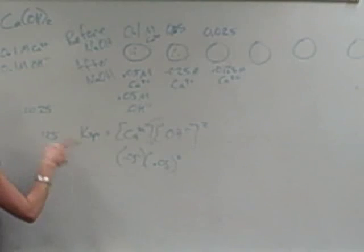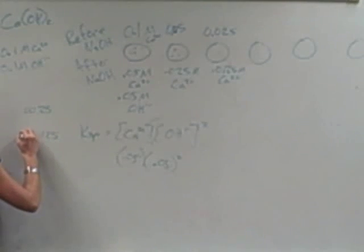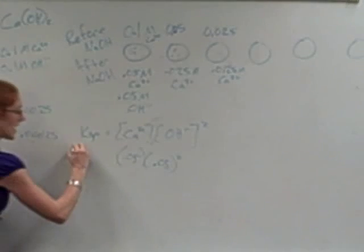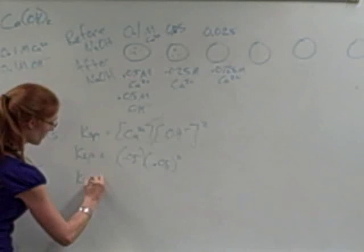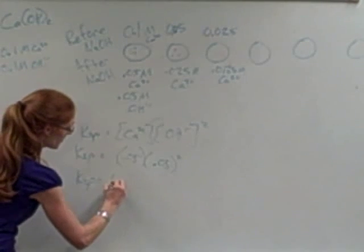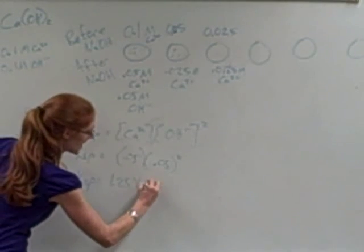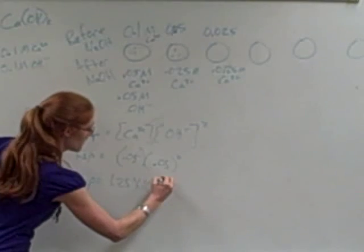So 1, 2, 5, and then I'm going to need two more zeros. So I would get my Ksp is equal to 1.25 times 10 to the negative 4th.